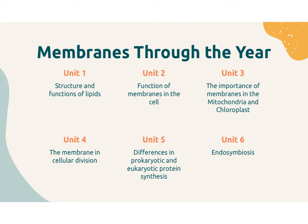In unit four, we're going to talk about what the membrane does during cellular division. In unit five, we're going to talk about how the difference in membranes, specifically the nuclear membrane, is going to make a difference in the protein synthesis of prokaryotes and eukaryotes. In unit six, we're going to talk about how membranes have evolved, endosymbiosis, and the evidence that membranes in our endosymbionts support that theory.